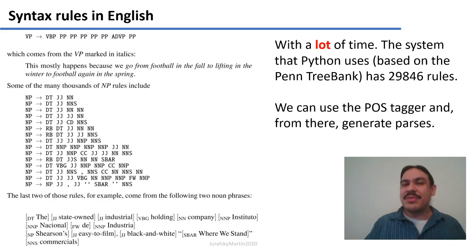The system that Python and NLTK use is based off of a collection of sentences called the Penn Treebank. And that collection has approximately almost 30,000 rules to explain the syntax of English sentences. So for example, the rule that we have here is a verbal phrase that goes to a VBP, which is a verb that's not conjugated, that is in the non-third person. So for example, go, drink, eat, as opposed to goes, drinks, and eats. So that's VBP.